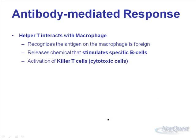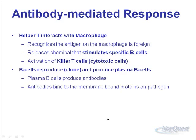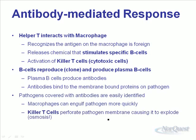The helper T cell interacts with the macrophage, recognizes the foreign antigen as being foreign, and releases a chemical that stimulates B cells. It also activates killer T cells, which go out and destroy foreign invaders. The B cells reproduce and some become plasma cells that produce large amounts of antibodies. Those antibodies bind to the membrane-bound proteins of a pathogen and aid in destroying it. Pathogens covered with antibodies are easily identified, or antibodies cause pathogens to clump together, allowing macrophages to find and engulf them. Killer T cells punch holes in the cell membrane of the pathogen.